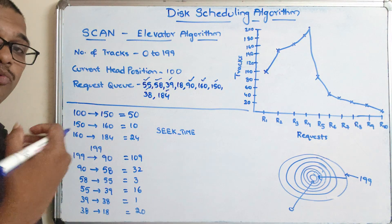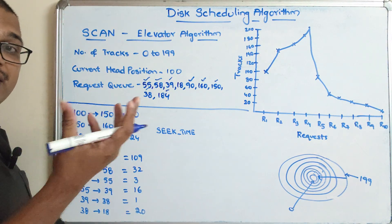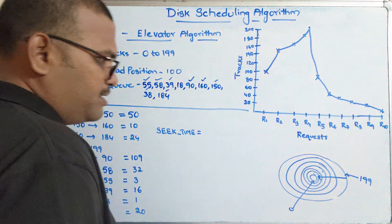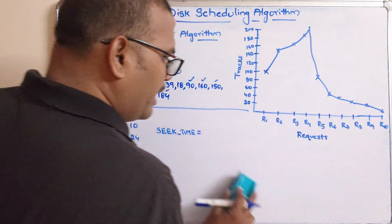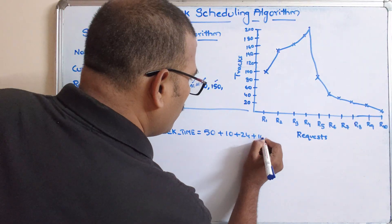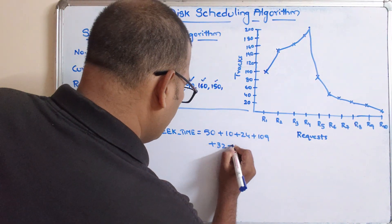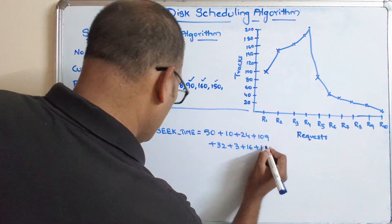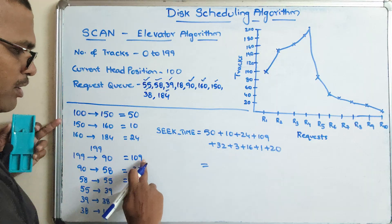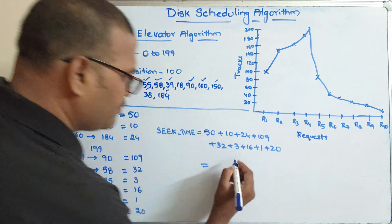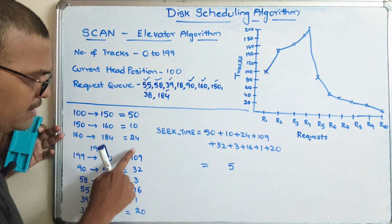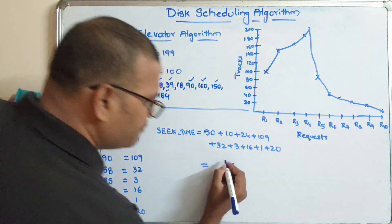The seek time is the time taken to move the read/write head to the desired location or desired track. The total seek time is the addition of all the individual seek distances: 50 + 10 + 24 + 15 + 109 + 32 + 3 + 16 + 1 + 20, which gives a total seek time of 280. You can see the seek time is less when compared to FCFS (First Come First Serve).